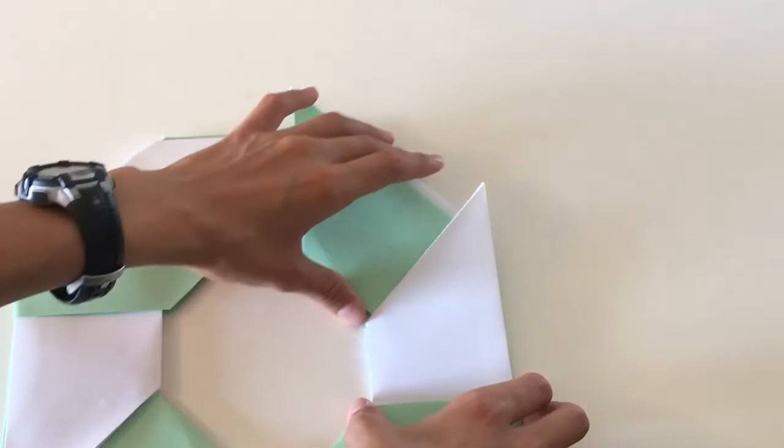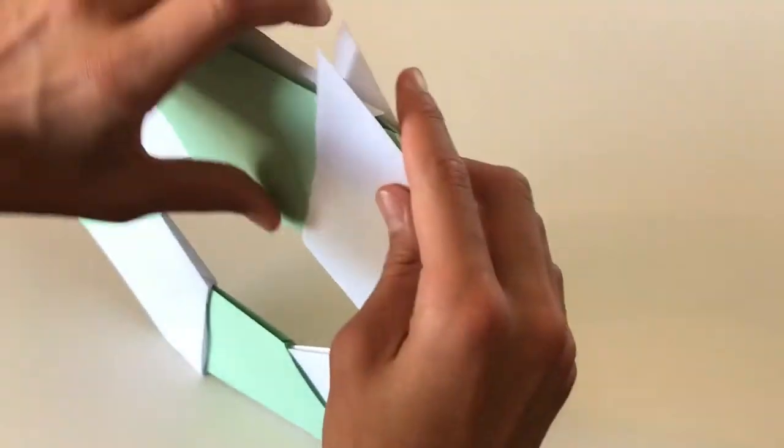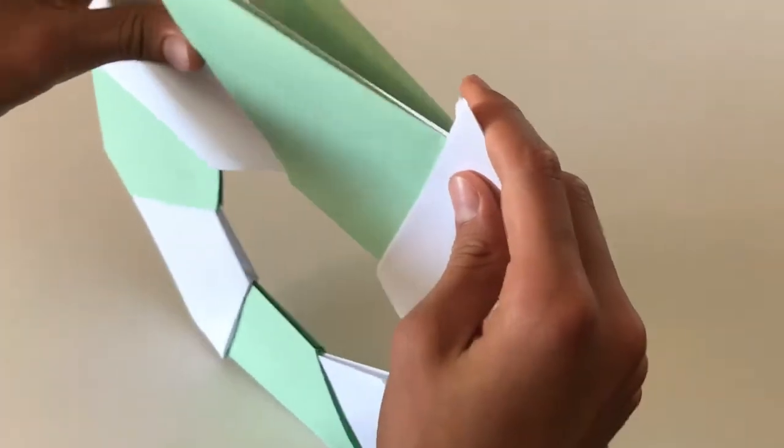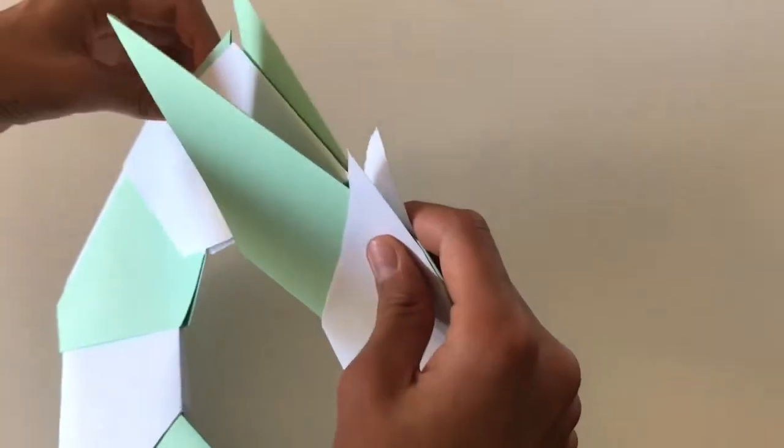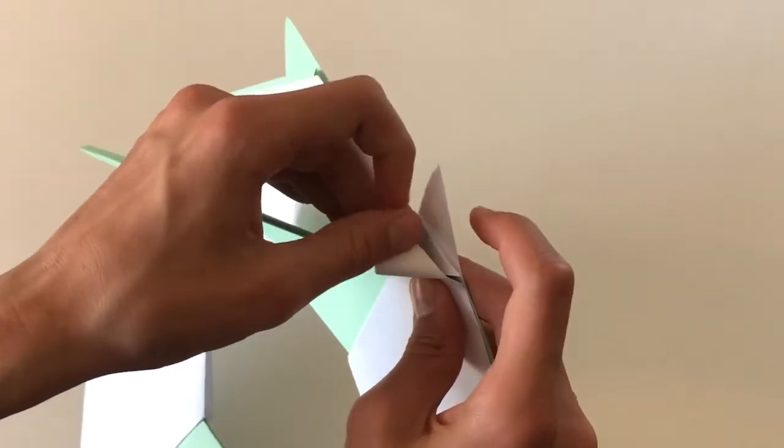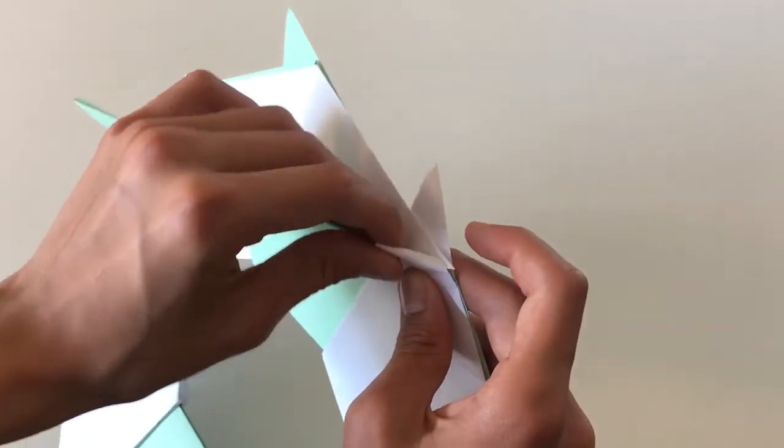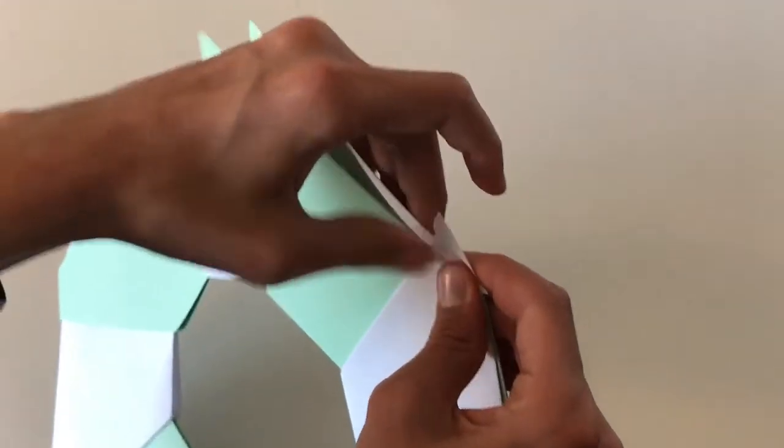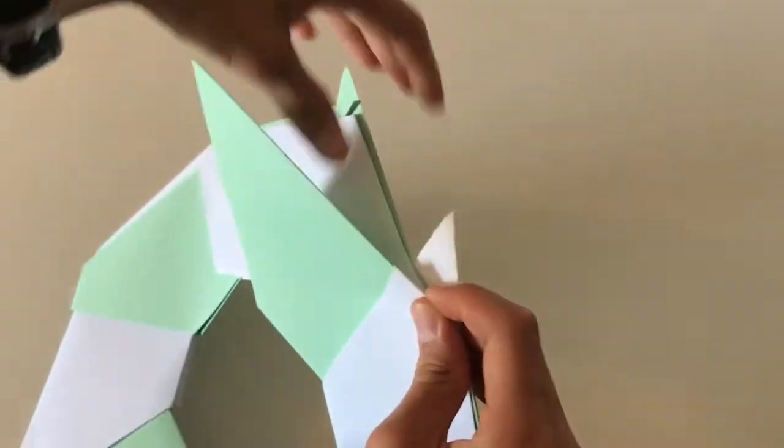And then all you need to do is do two more of these and you need to make sure that you do not fold over the white line. You want to make sure that when you fold these down they stay on their own side. People have made that mistake so many times and it did not work out for them.